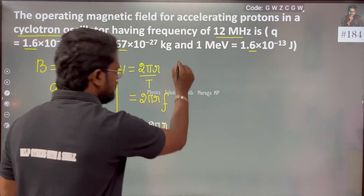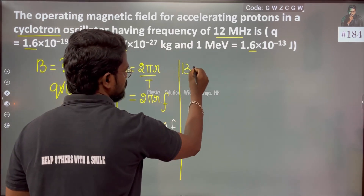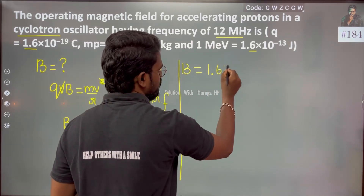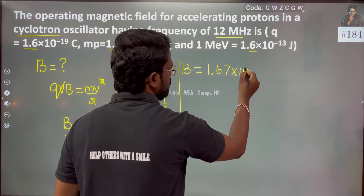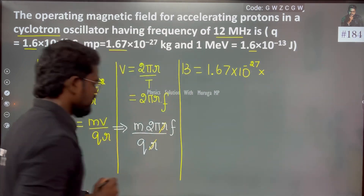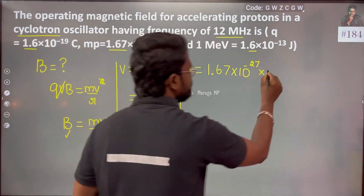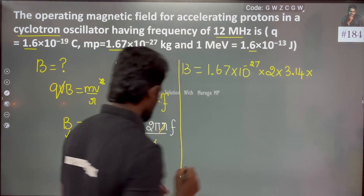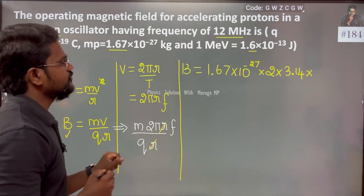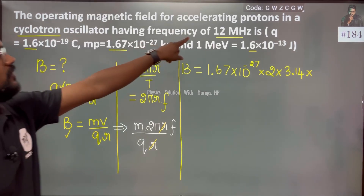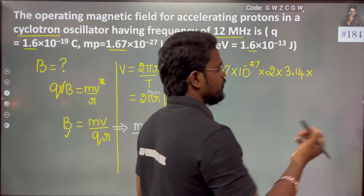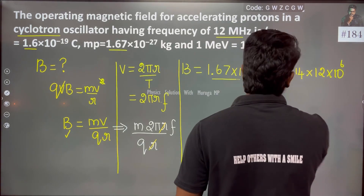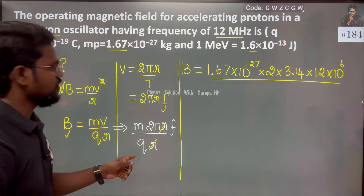The magnetic field equals the mass of the proton, which is 1.67 × 10⁻²⁷ kg, multiplied by 2π (that is 3.14), and multiplied by the frequency, which is 2 mega hertz, or 2 × 10⁶ Hz.